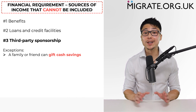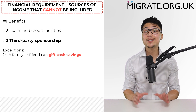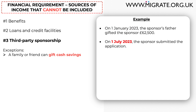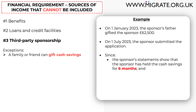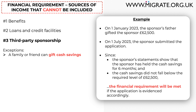One commonly relied-on way to satisfy the financial requirement is for a friend or family member to gift — but not loan — cash savings to the applicant and/or sponsor. For example, on the 1st of January 2023, the sponsor's father gifted the sponsor £62,500 by transferring it to the sponsor's bank account. On the 1st of July 2023 — six months after the cash savings were gifted — the sponsor submitted the application. Since the sponsor's personal bank statement showed that the sponsor had held the cash savings for six months and that the cash savings did not fall below the required level of £62,500, the financial requirement will be met if the application is evidenced accordingly.